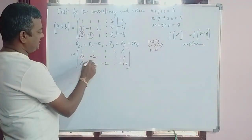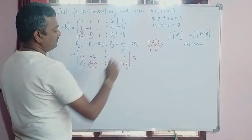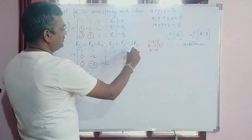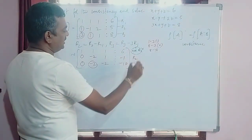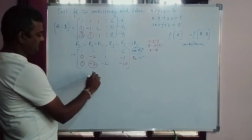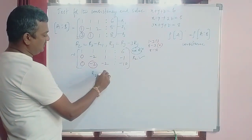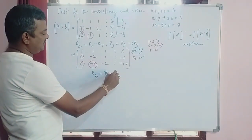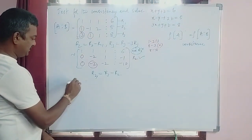Now we have to make this element 0 by the help of R2, not R1. We are not using R1, we are using R2 only. So further what is R3? R3 is R3 minus R2.